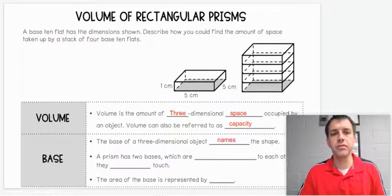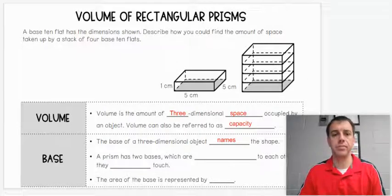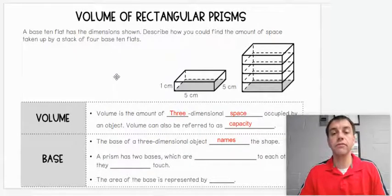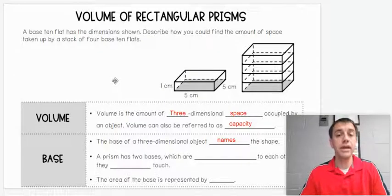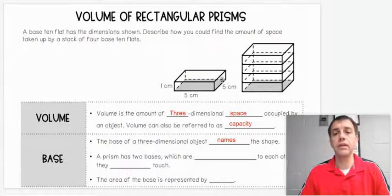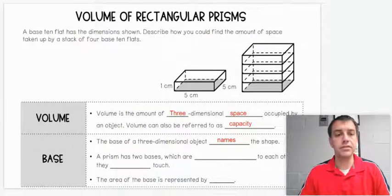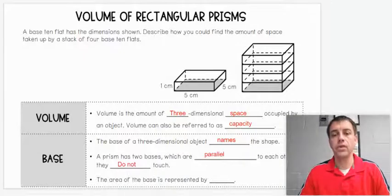The base of a three-dimensional object names the shape. When we use our volume formula, base means the area of whatever object is on the bottom. A prism has two bases which are parallel to each other and they do not touch.